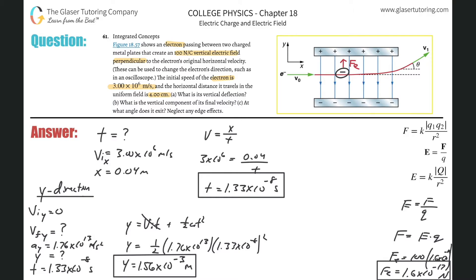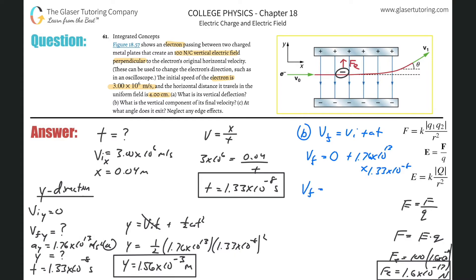Now Letter B: what is the vertical component of the final velocity? Using the kinematic formula V_f equals V_i plus A times t — the initial y velocity is zero, so it's just the acceleration 1.76 times 10 to the 13th times the time 1.33 times 10 to the minus 8. Calculating gives a final vertical velocity of about 2.34 times 10 to the 5 meters per second. That is the final velocity in the y direction.